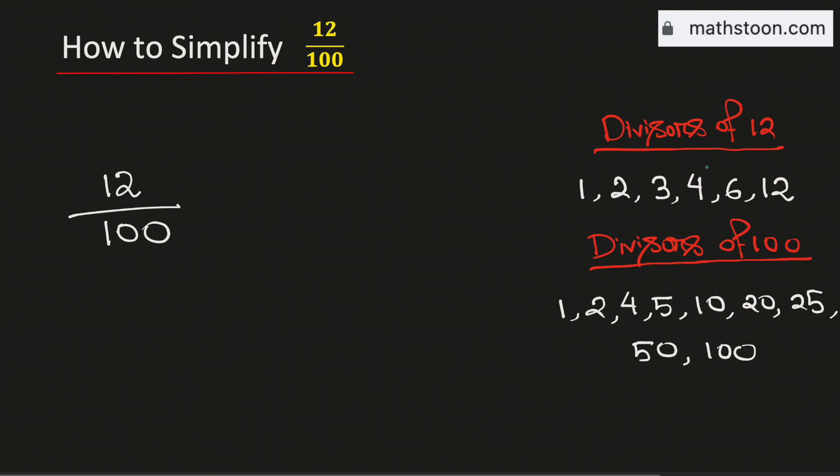Among these numbers, see that 4 is the greatest one which is present in both these two lists. Therefore, 4 is the greatest common divisor of 12 and 100.